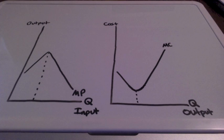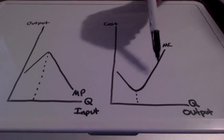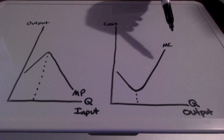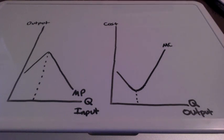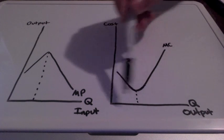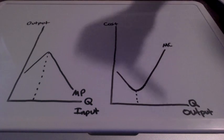Marginal cost is the change in total cost that arises when the quantity produced changes by one unit. Marginal cost at each level of production includes any additional costs required to produce the next unit, the next quantity of output.